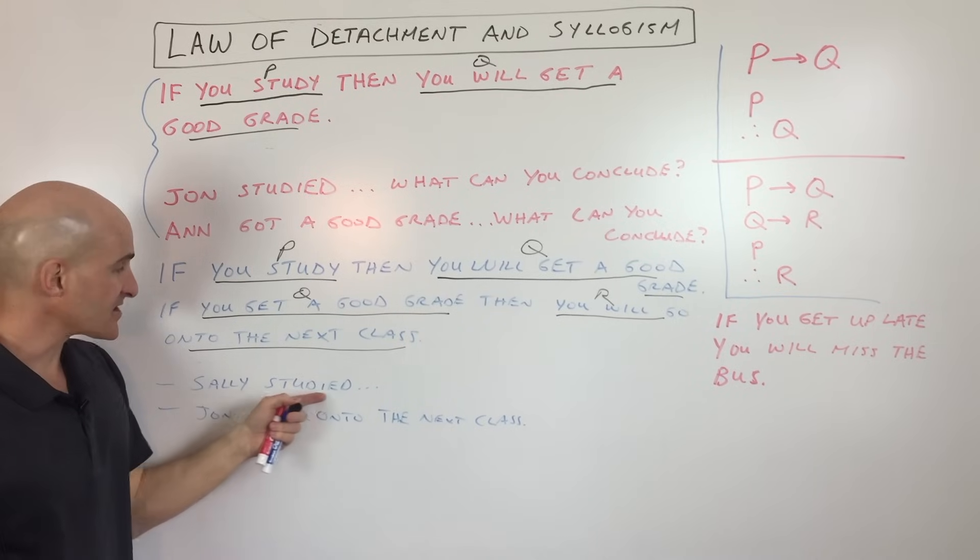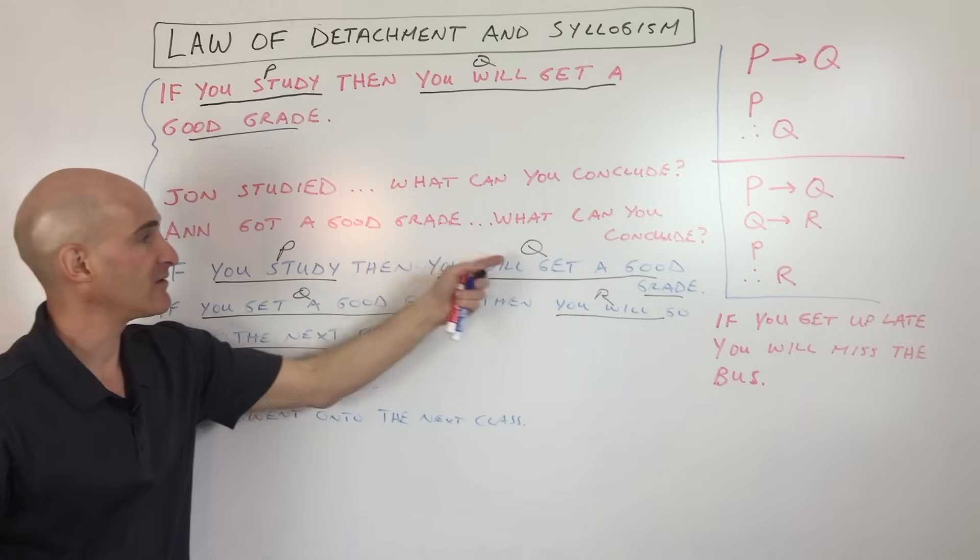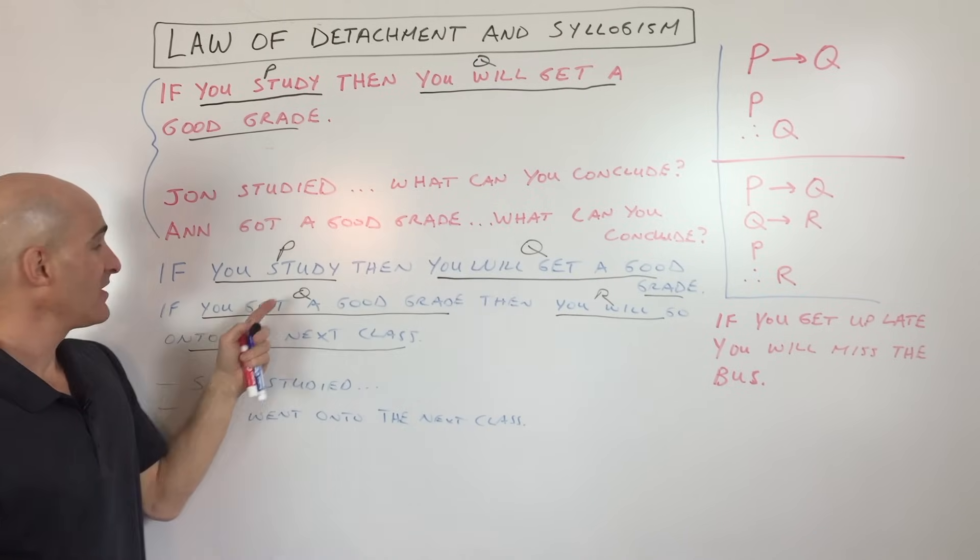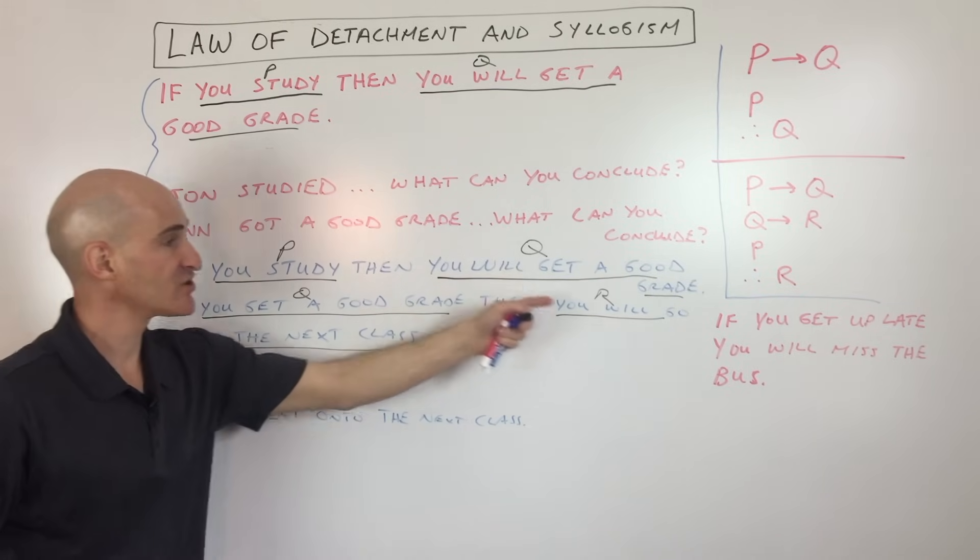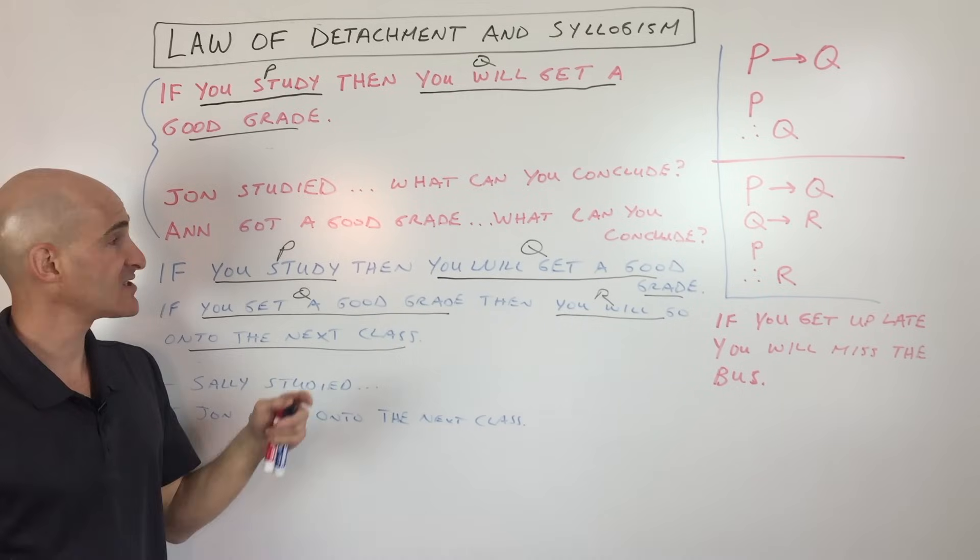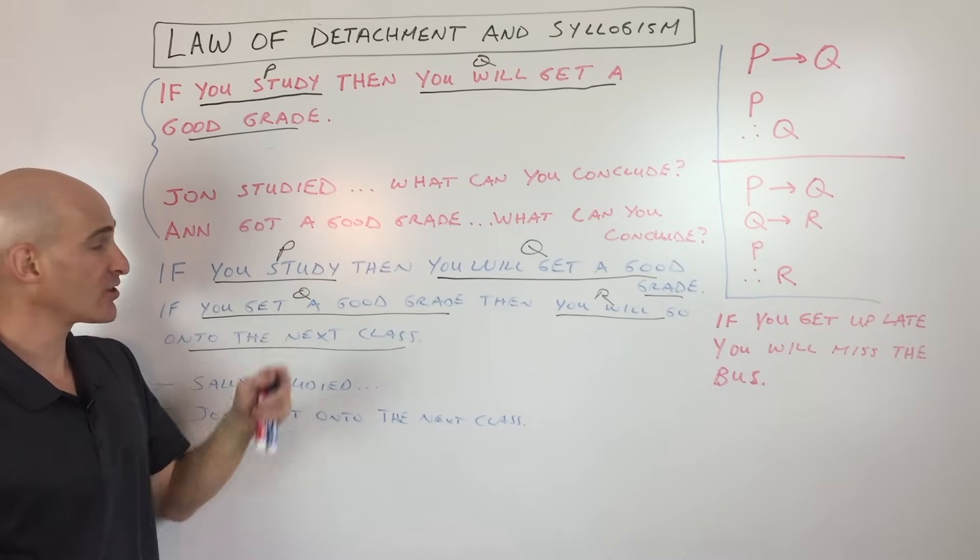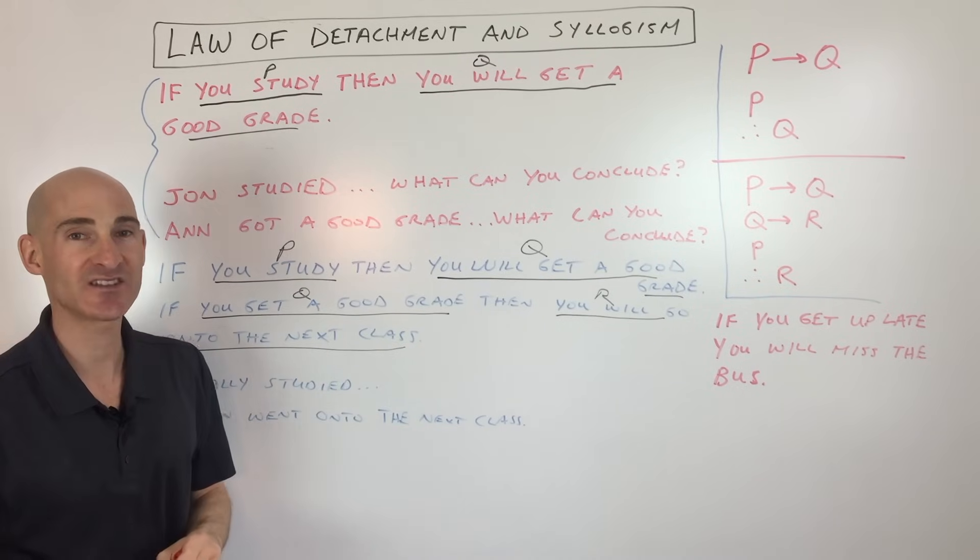So here, if we say Sally studied, what can you conclude if Sally studied? Well, if she studied, then she's going to get a good grade. Because she's getting a good grade, she's going to go on to the next class. So all you have to state is that, since Sally studied, the conclusion is Sally went on to the next class.